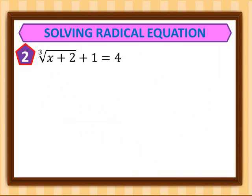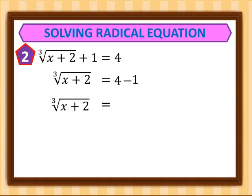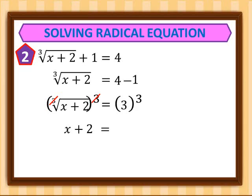For the second example: the cube root of x plus 2, plus 1, is equal to 4. We transpose the 1 to the right side, giving us the cube root of x plus 2 equals 4 minus 1, which equals 3. Now we cube both sides, canceling the index and exponent, leaving us x plus 2 equals 3 cubed, which is 27.